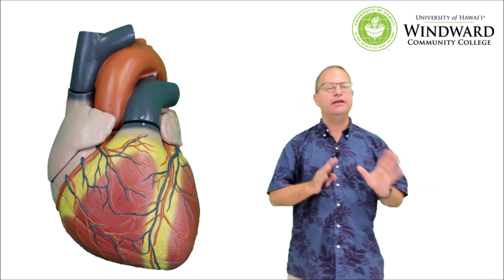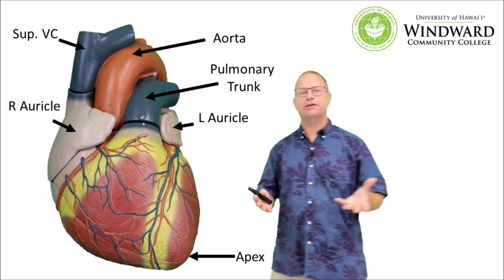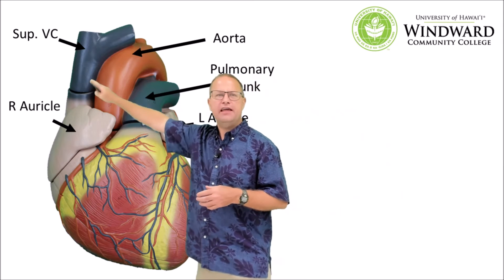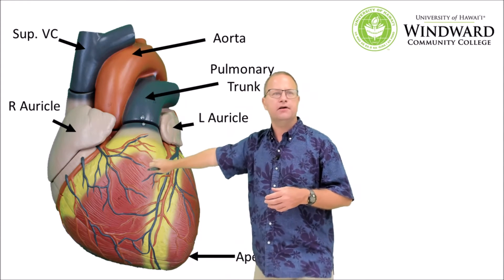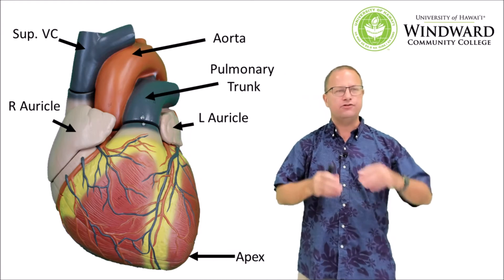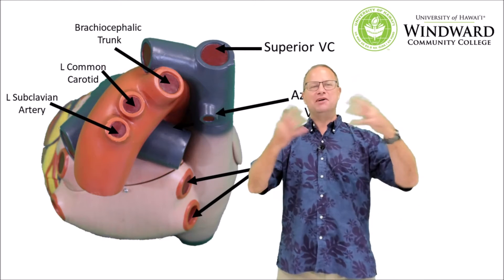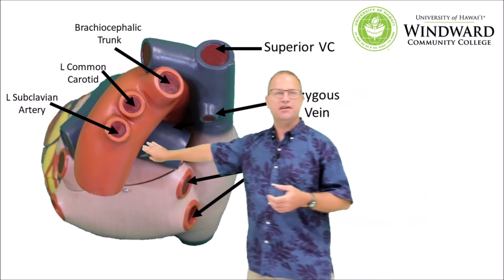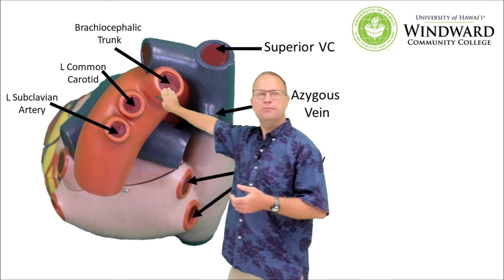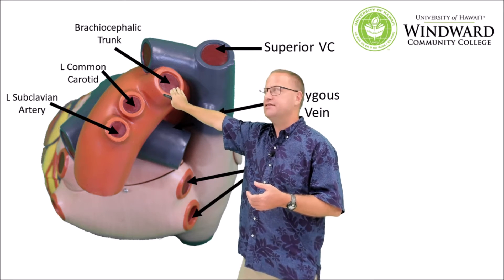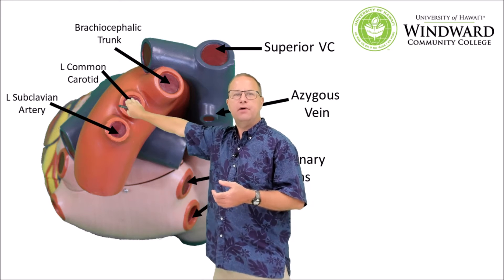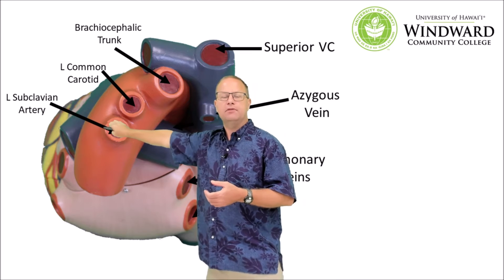Before we wrap up, let's look at the Alte Scientific four-part dissectable heart model, which is much larger. Working with it in a classroom is a real joy because you can see a lot of things you can't see on smaller models. The anatomy is identical — we have our superior vena cava, right auricle, aorta, pulmonary trunk, left auricle, and apex. Up top we can see much more detail: the arch of the aorta with the brachiocephalic trunk on the right giving rise to the right carotid and right subclavian, and separately the left common carotid and left subclavian.